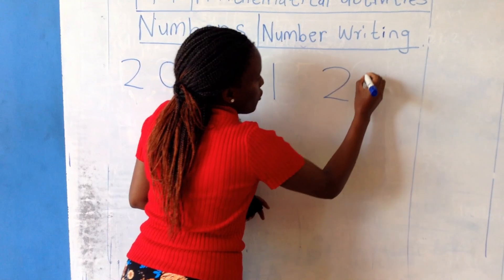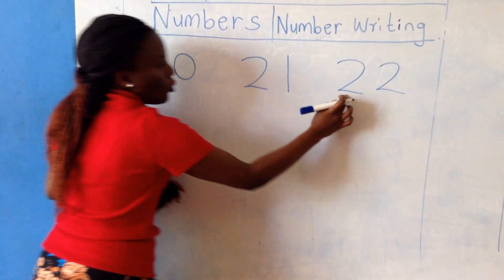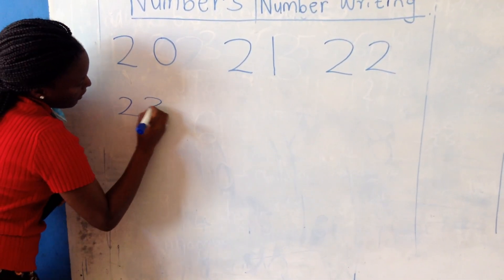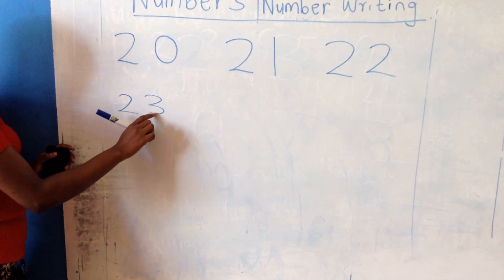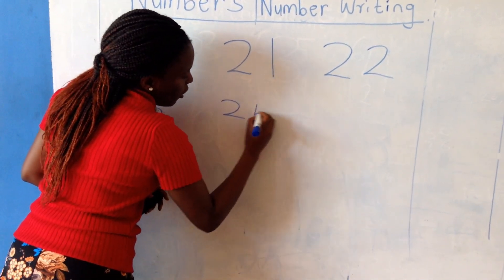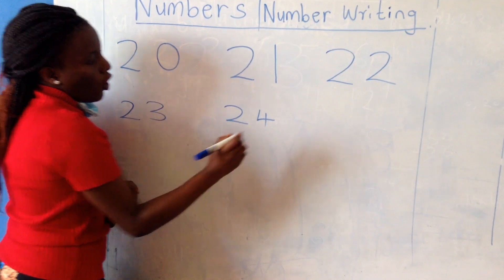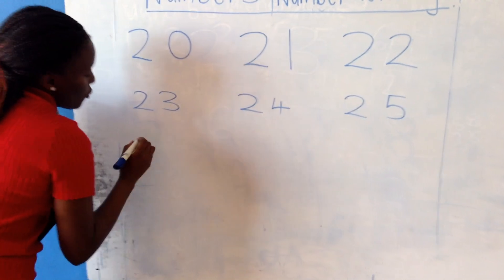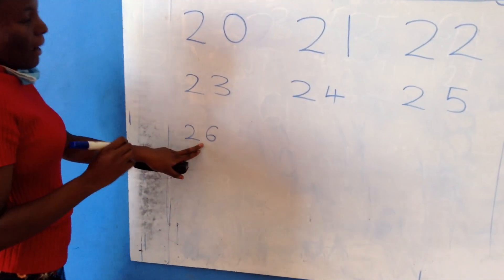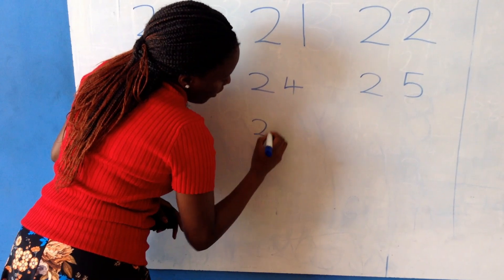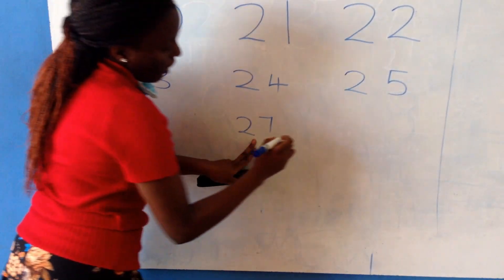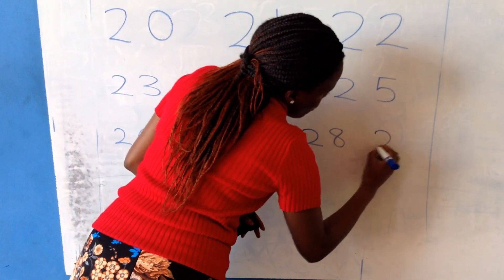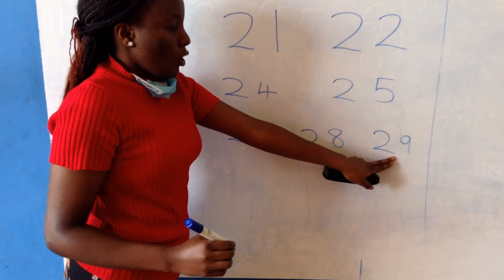Twenty-two: two and two — it is number twenty-two. Twenty-three: two and three — it is number twenty-three. Two and four — it is number twenty-four. Two and five — it is number twenty-five. Two and six — it is number twenty-six. Two and seven — it is number twenty-seven. Two and eight — it is number twenty-eight. Two and nine — it is number twenty-nine.